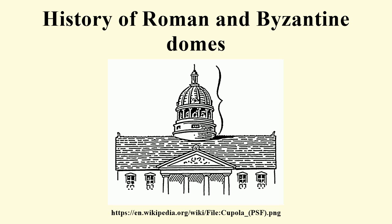Early examples rested directly on the rotunda walls of round rooms and featured a central oculus for ventilation and light. Pendentives became common in the Byzantine period, providing support for domes over square spaces. Early wooden domes are known only from a literary source, but the use of wooden formwork, concrete, and unskilled labour enabled domes of monumental size in the late Republic and early Imperial period. Nero introduced the dome into Roman palace architecture in the 1st century, and such rooms served as state banqueting halls, audience rooms, or throne rooms.